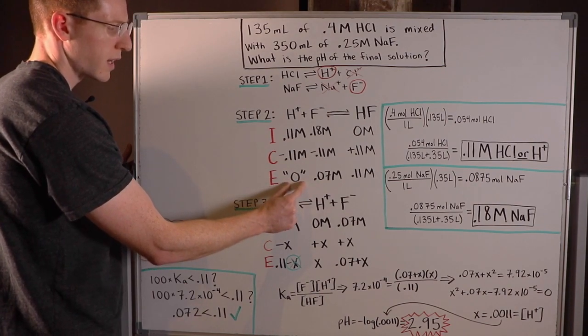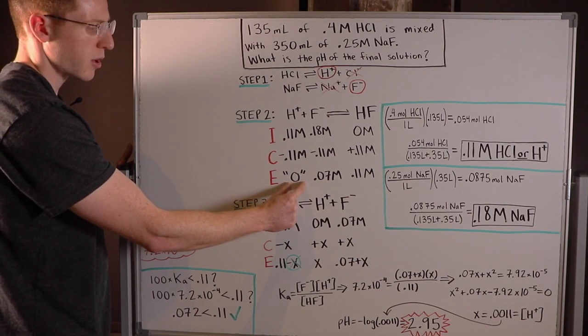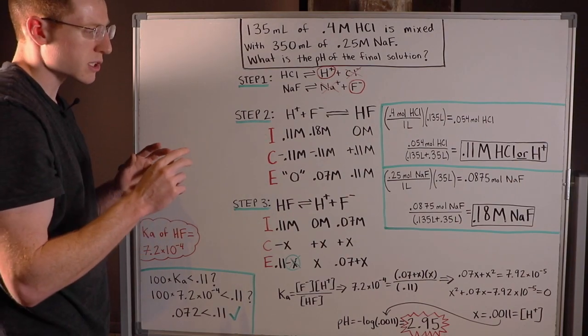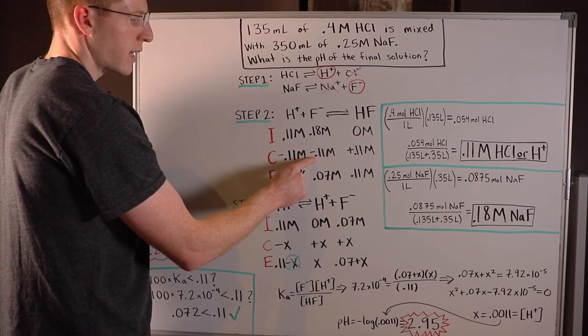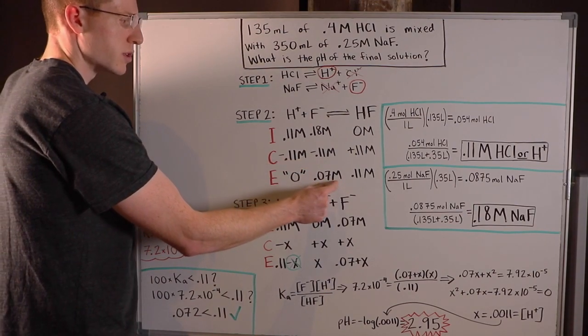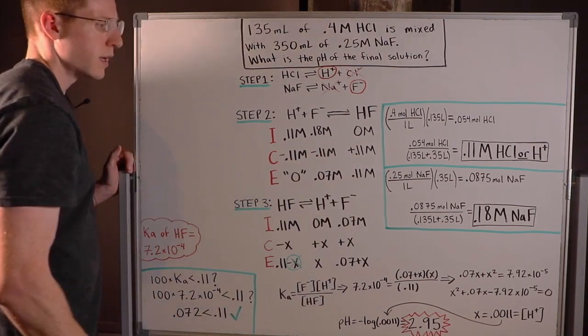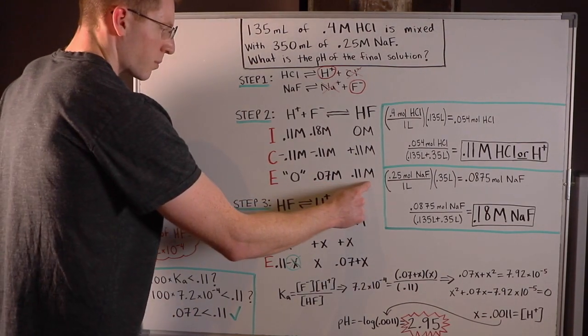And then I subtracted 0.11 from 0.11, and I got zero. And I actually put that in quotation marks because this is not actually zero, but we're going to correct for it in step three. 0.18 minus 0.11 is 0.07 molar. And finally, zero plus 0.11 molar is 0.11 molar.